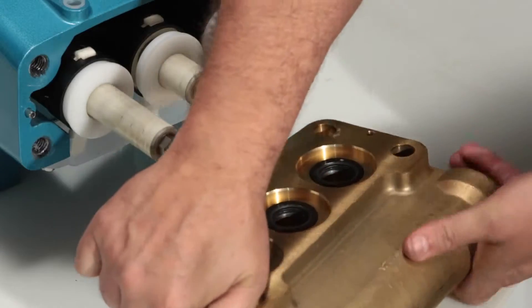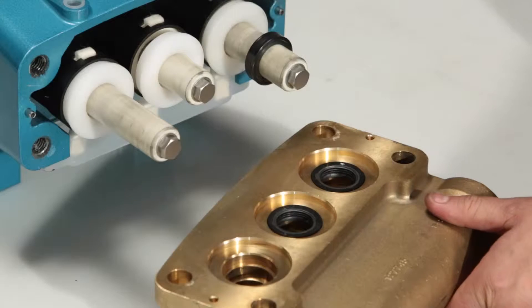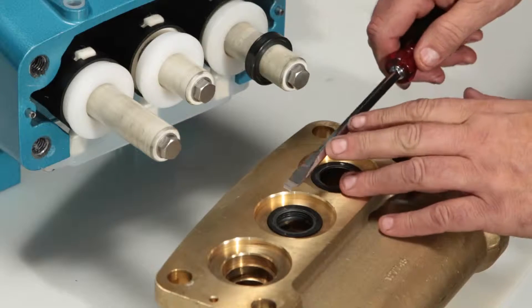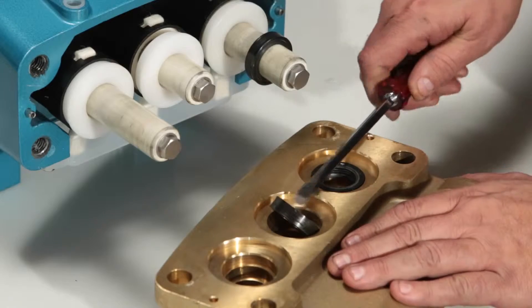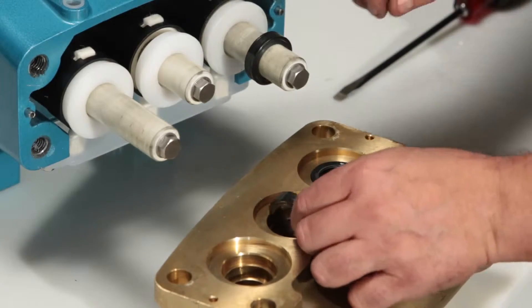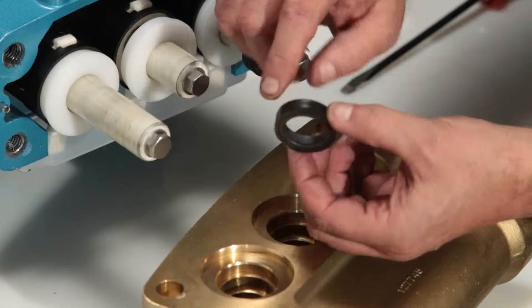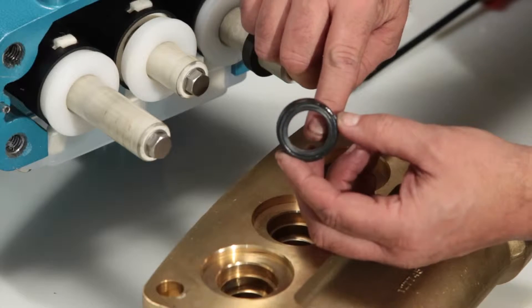Access the low pressure seal, flip the manifold around and remove with a screwdriver. Use caution not to scratch the sealing surface. Check the inside of the seal for wear or damage.